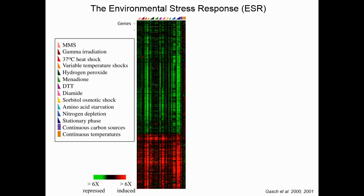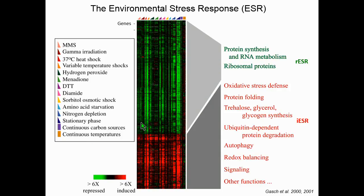The transcriptome change upon stress in yeast has already been intensively studied, going back to the 2000 Gasch et al. paper. There are several different kinds of stress that have already been studied, and even though they are all different kinds of stress, there is a common pattern in the transcriptome change. Gasch et al. grouped those genes as the Environmental Stress Response, or ESR. It contains two groups — the first is the iESR, the induced ESR, which contains about 300 genes whose functionality is related to stress defense.